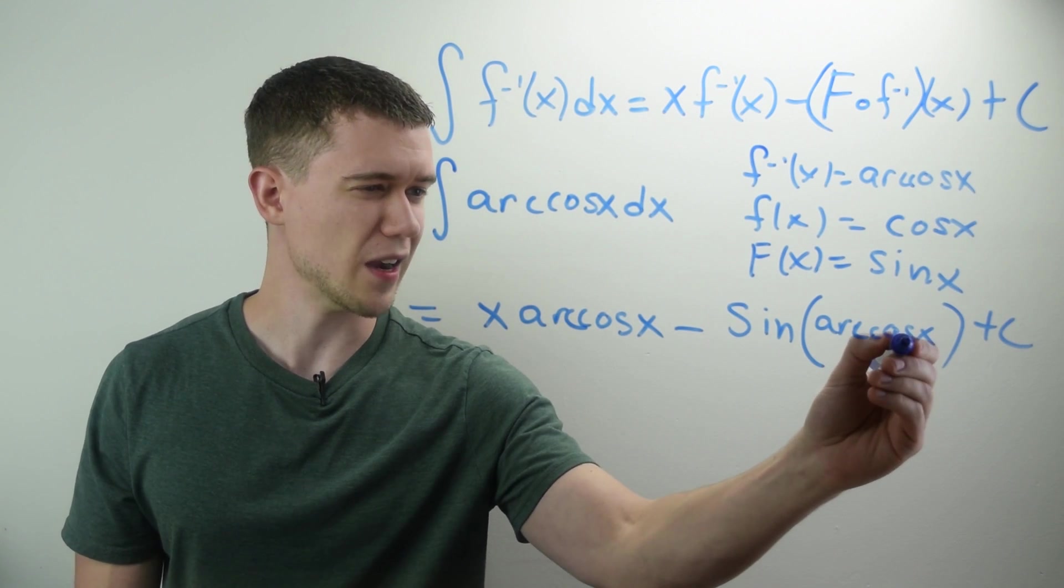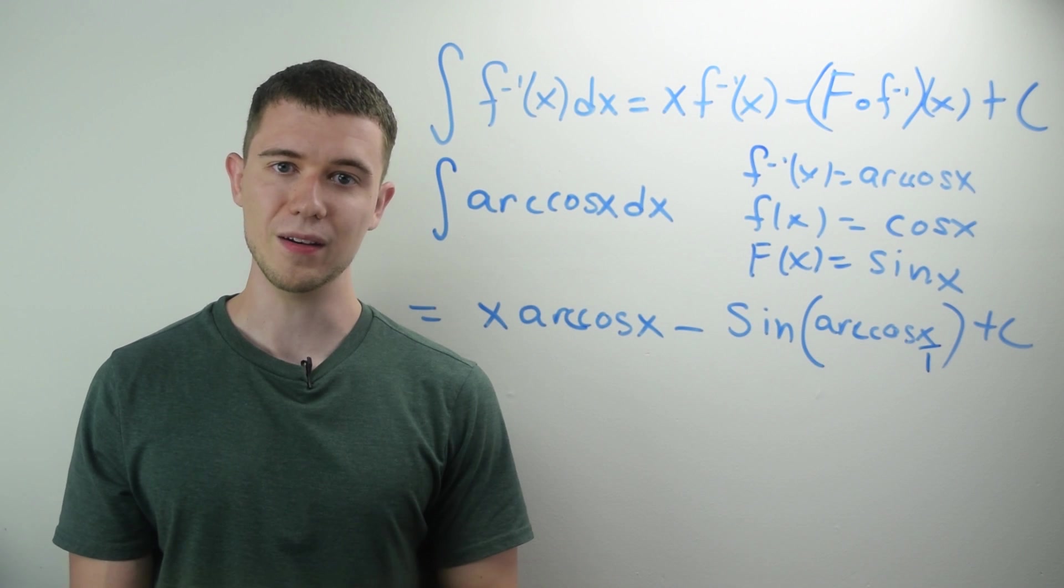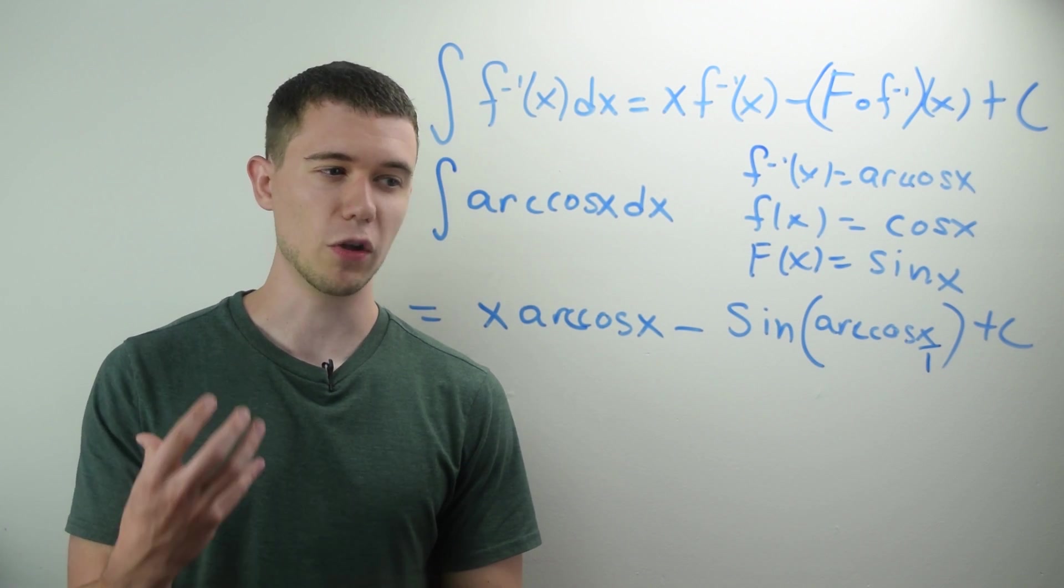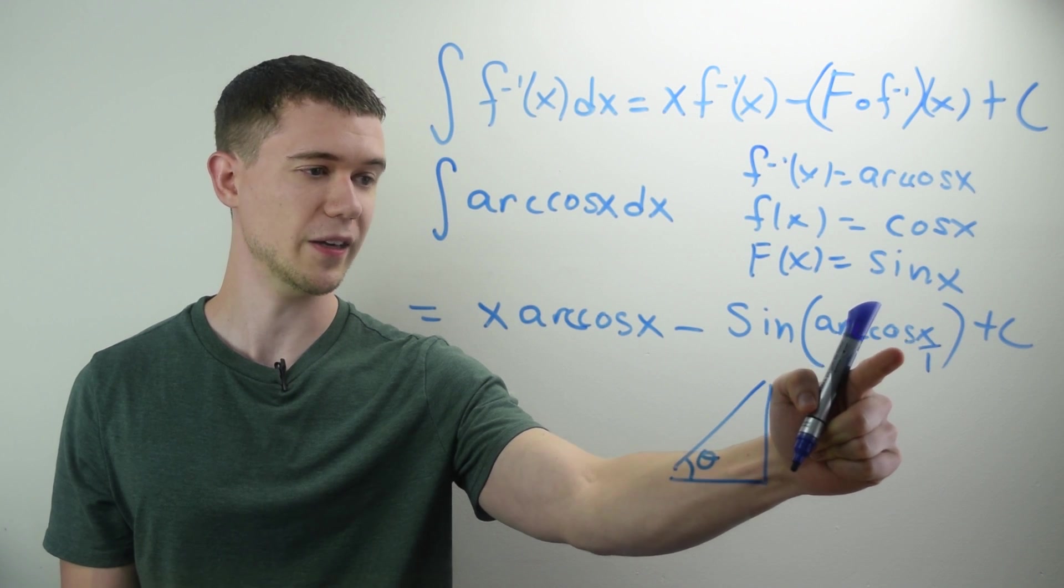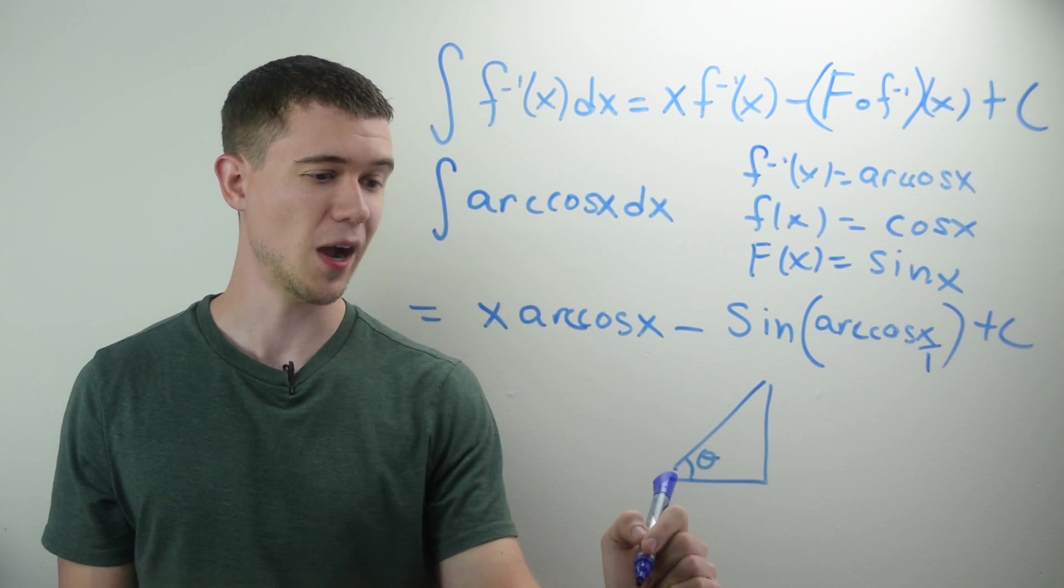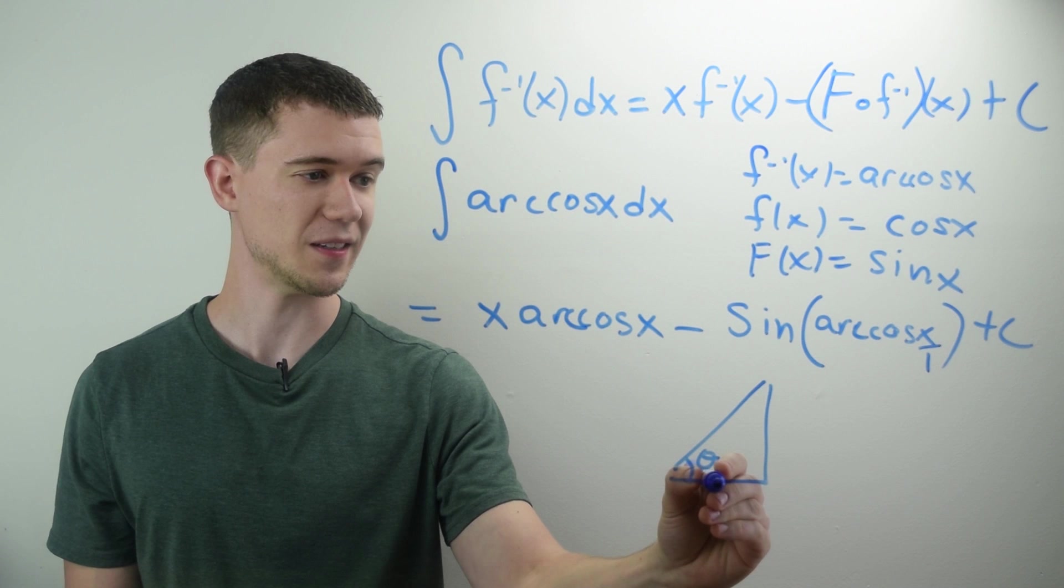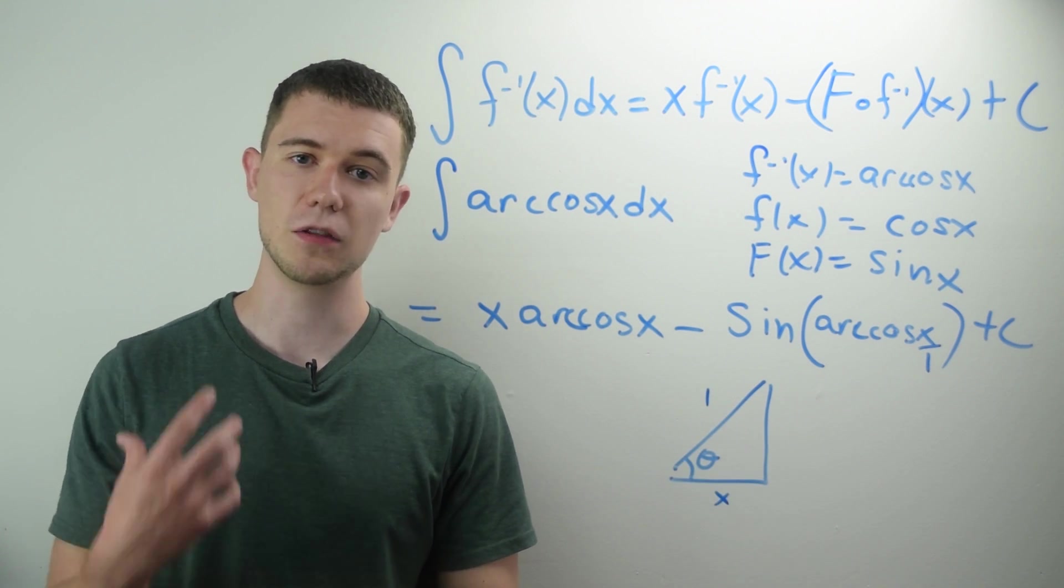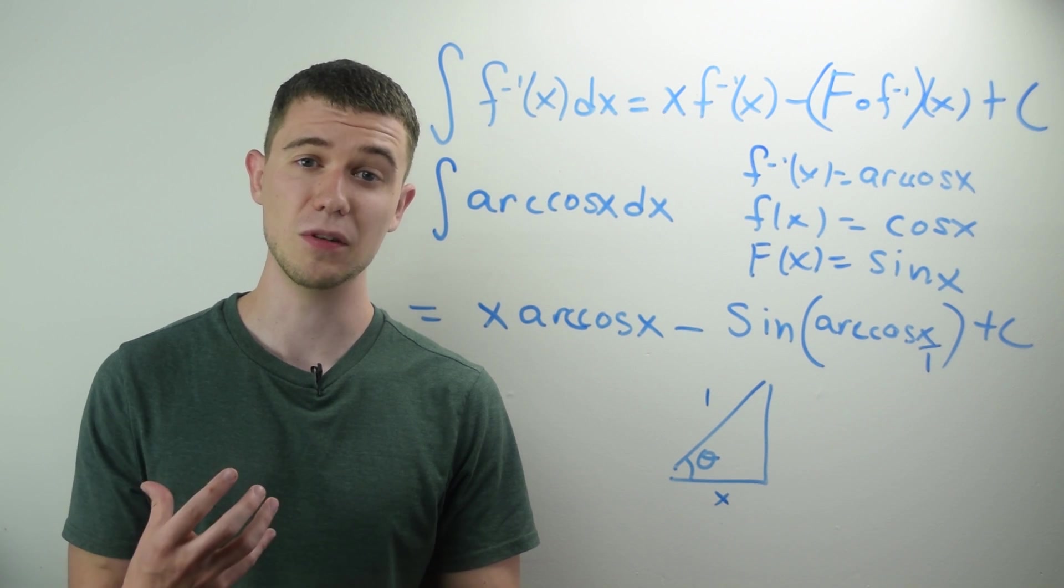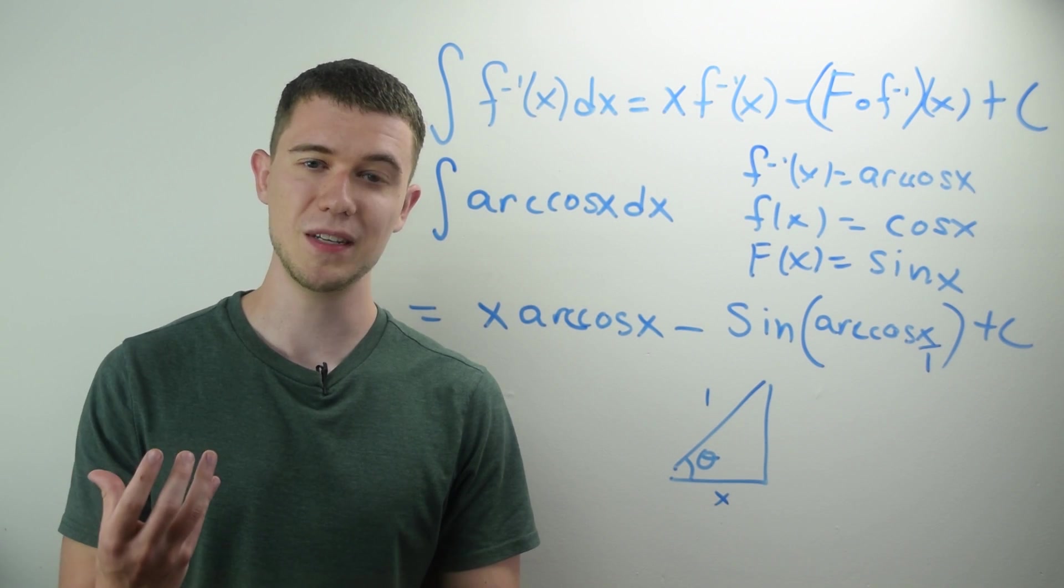If we think of sine of arc cosine of x as x over 1, and if you remember how to do this, we draw a triangle. Since I'm talking about cosine as adjacent over hypotenuse, that means the adjacent side would be x. The opposite side would be 1. And I can get the third side by the Pythagorean theorem, a squared plus b squared equals c squared.